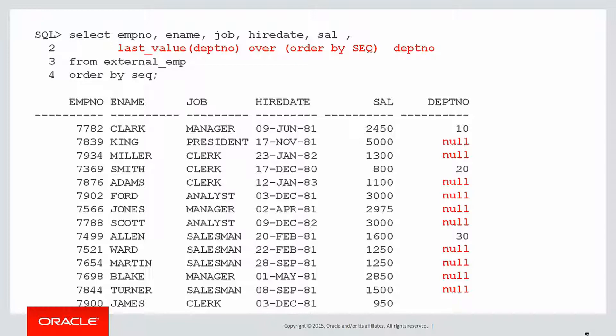So the first row it hits, it sees 10, that's the last value. The next row it sees, it's null, that's the last value seen. And so it simply carries it all the way down.